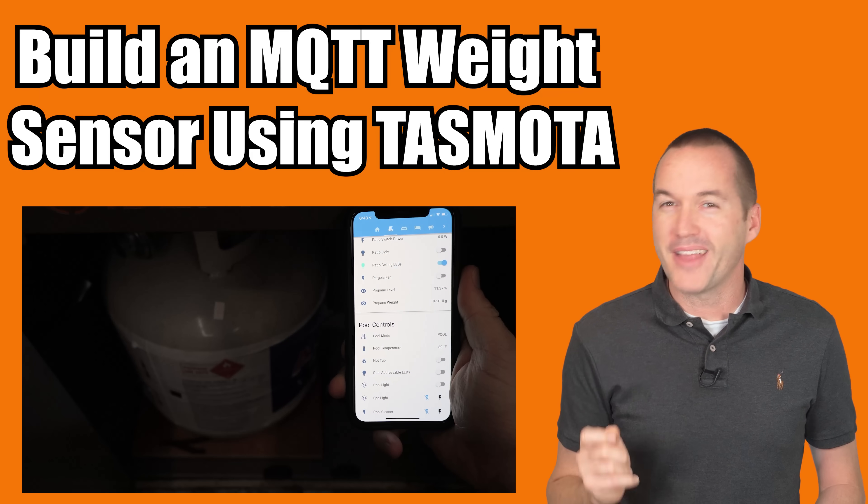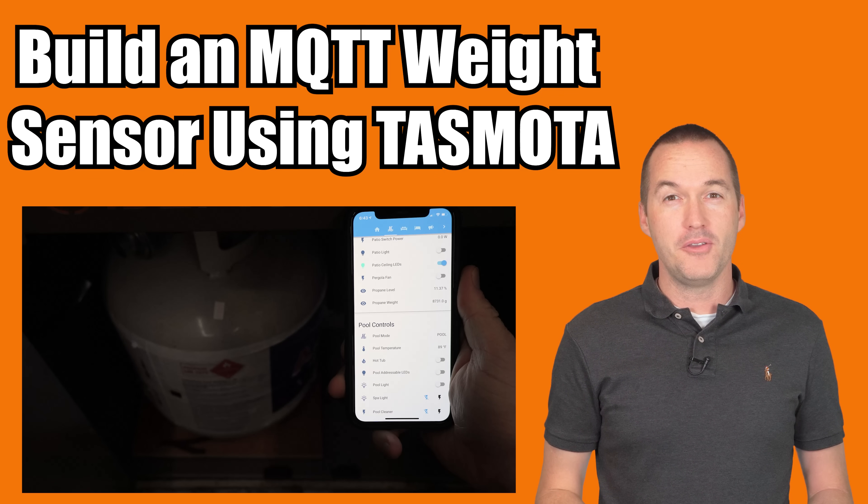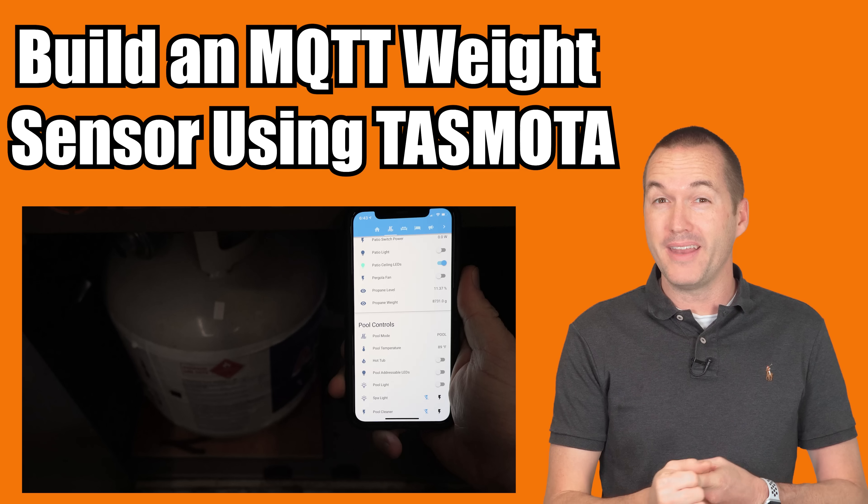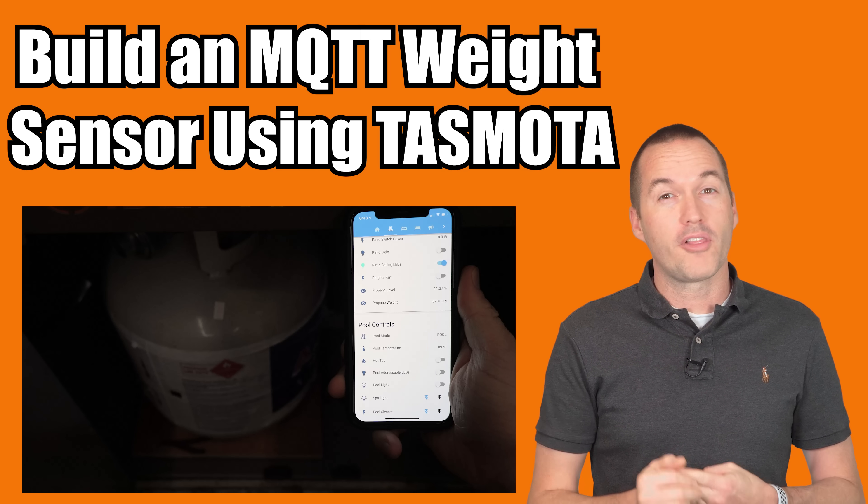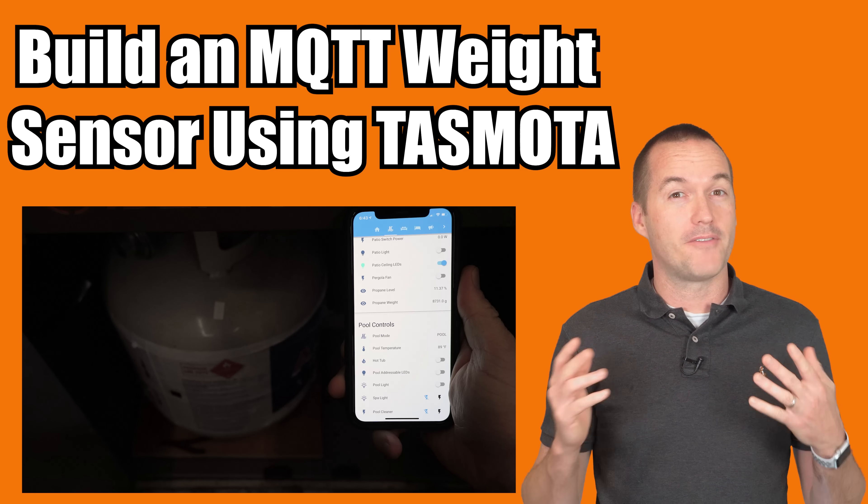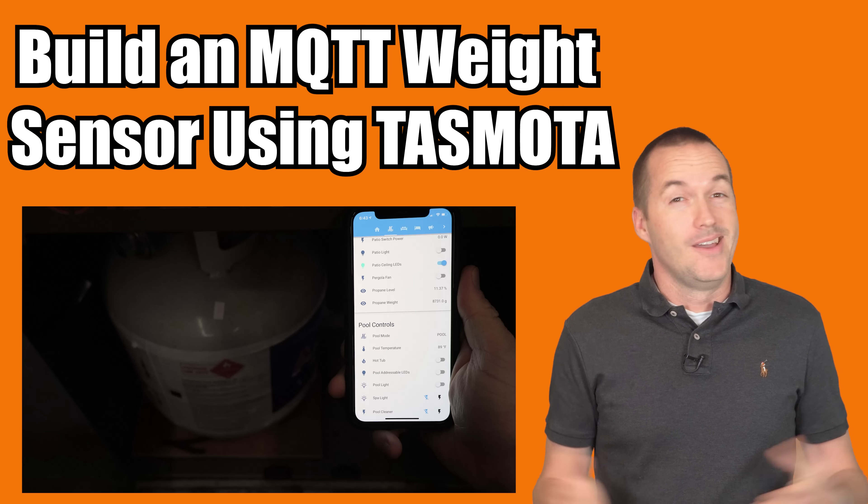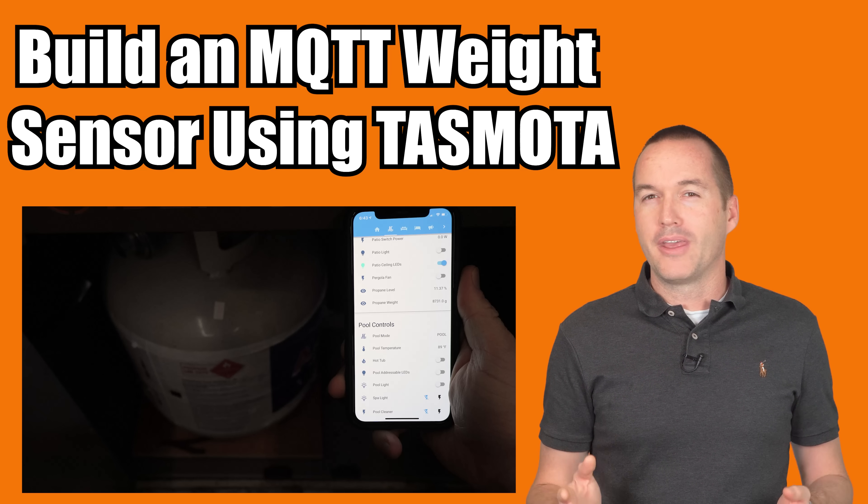Today on the hookup we're going to build a simple internet of things weight sensor that you can use to measure things like how much propane is in your barbecue tank, CO2 is left in your keg, or with a little modification you can even measure the amount of salt left in your water softener. The possibilities are endless. And we're going to do it without coding and under $15.